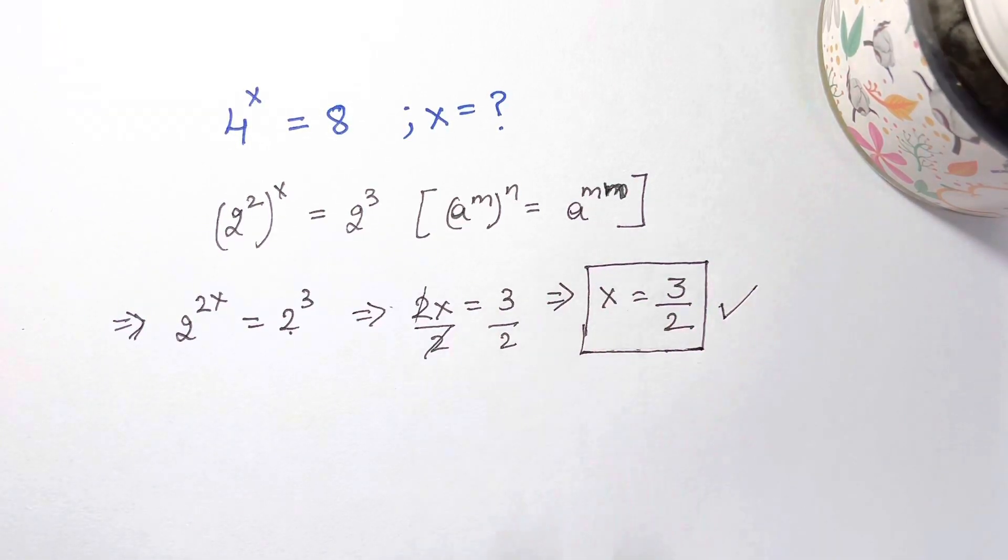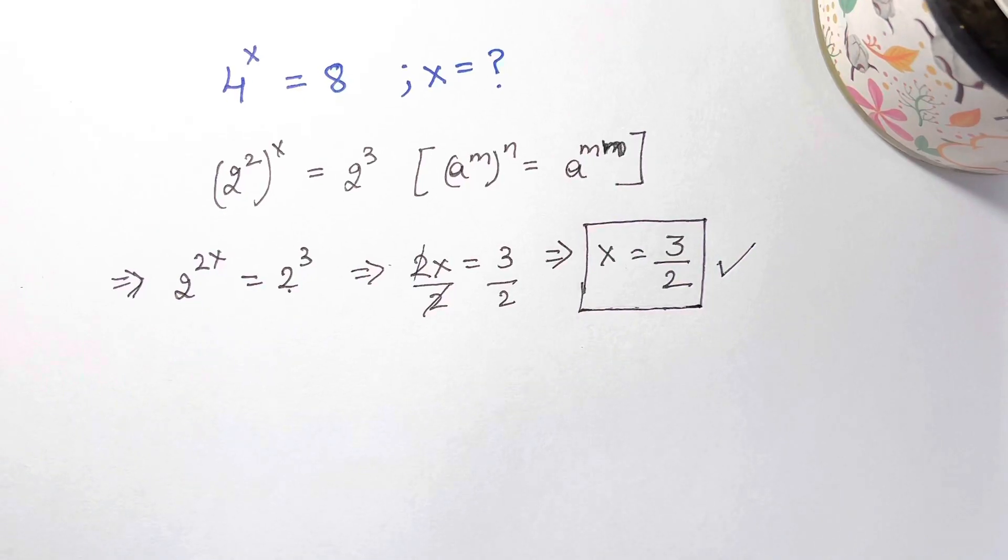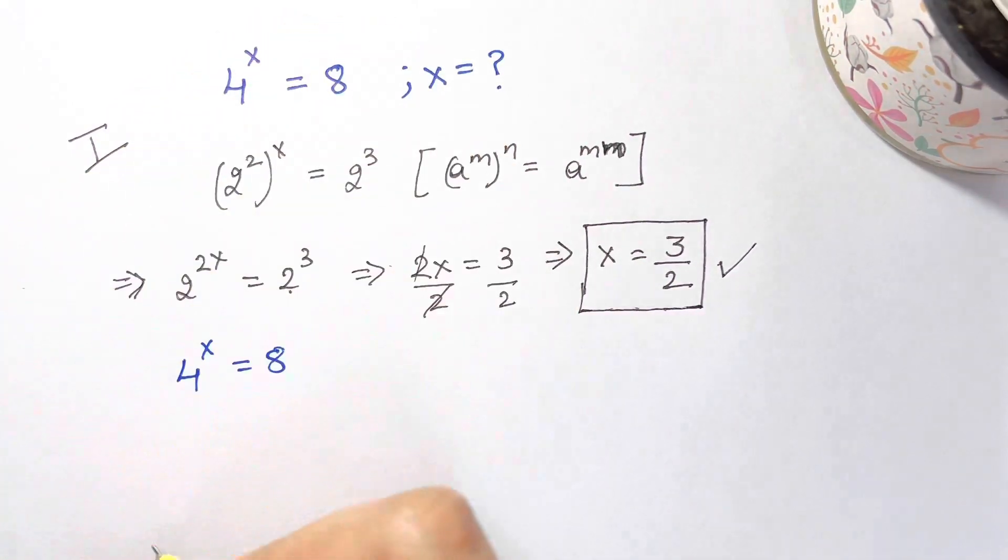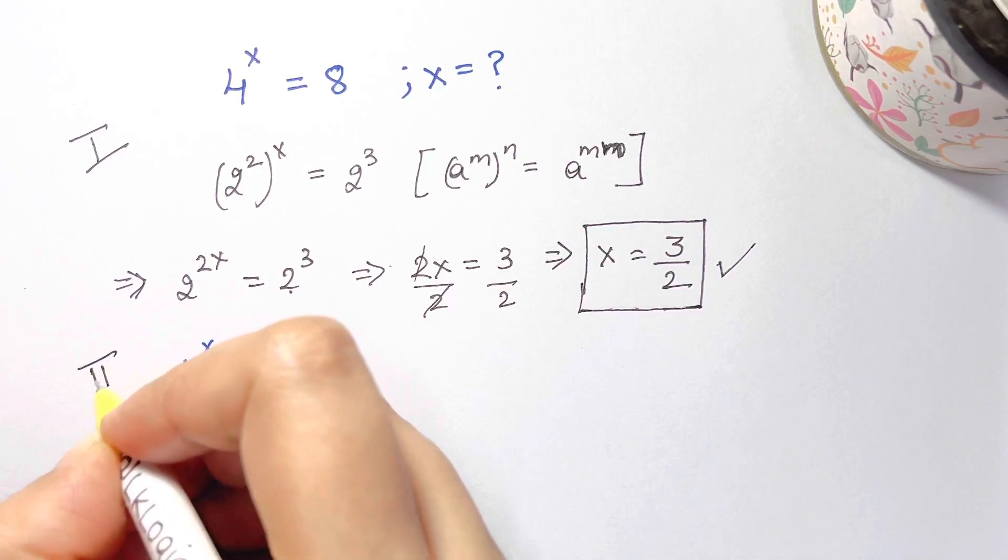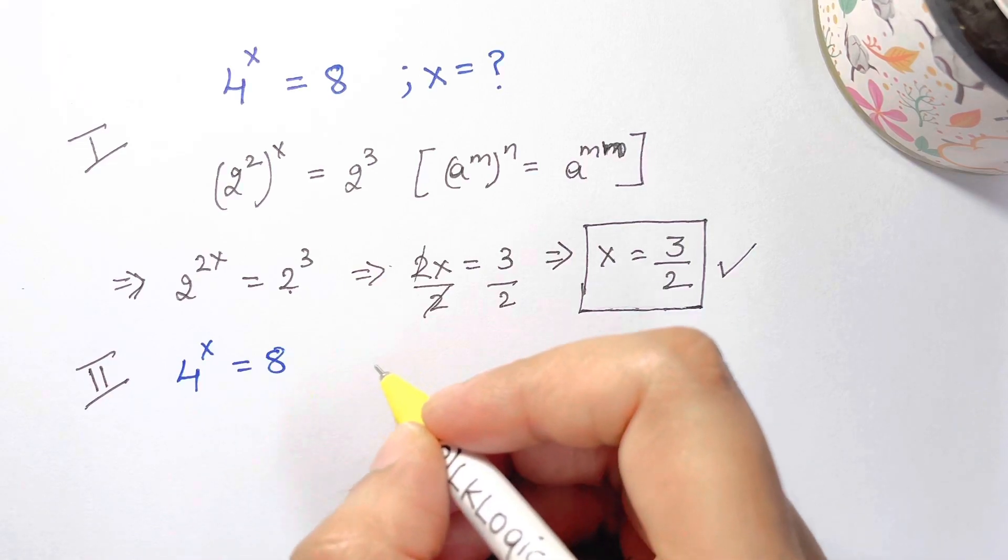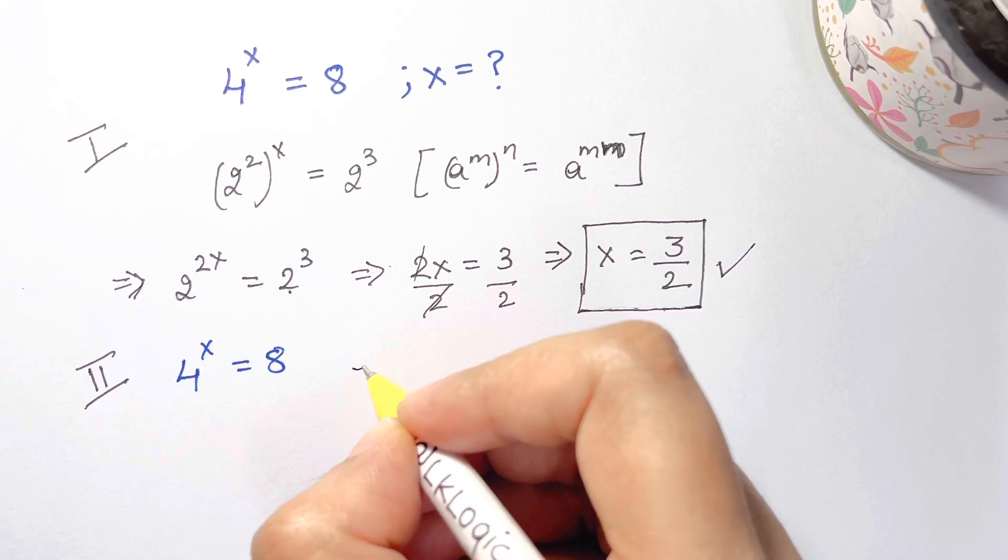Now there's another method to find out. Let's see what that method is. This was the first method we tried and this is the second method. We have 4^x = 8.